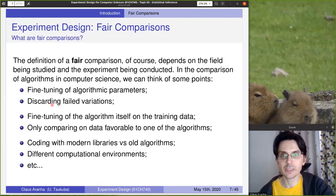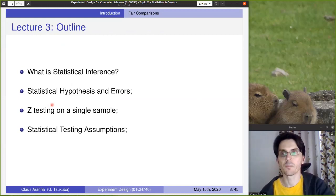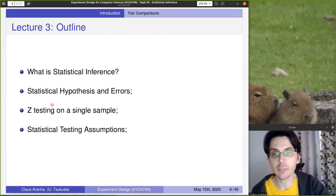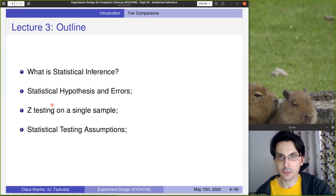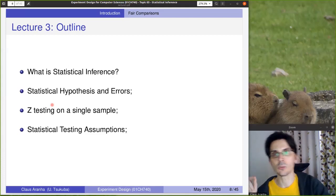All right, now that we talked a little bit about science in general, let's go into this lecture. The topics of this lecture: What is statistical inference? Statistical hypotheses and errors. Z testing on a single sample. And statistical testing assumptions. I'm going to take a quick break now and then we're going to start with statistical inference. See you on the next video.